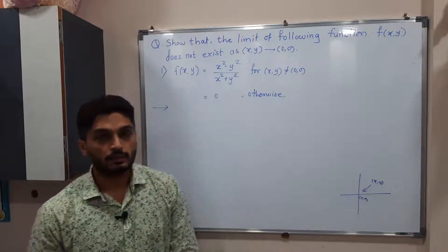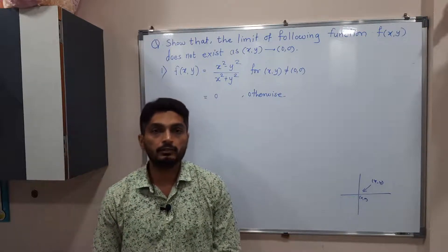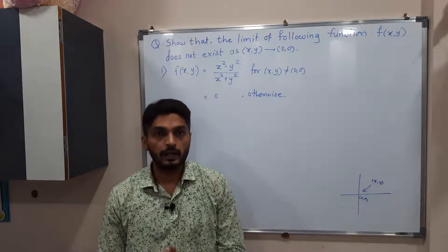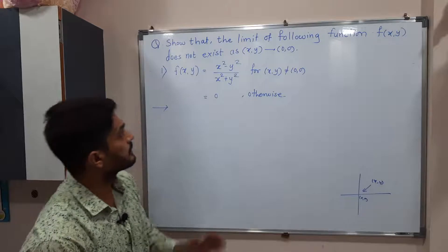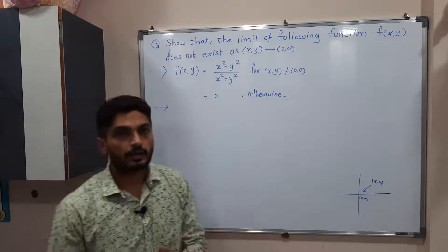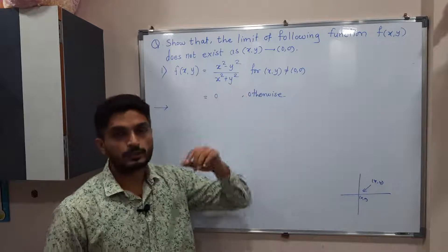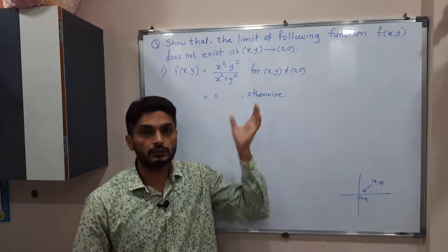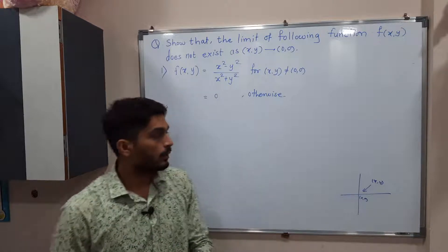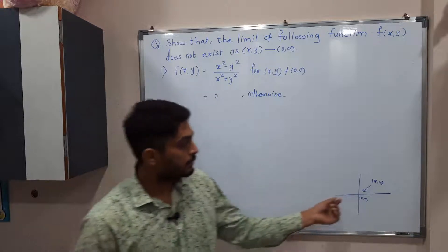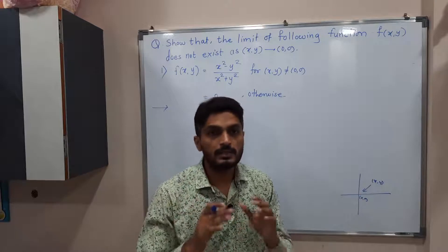Let us solve this example. We have to find the limit of a scalar value function at (x,y) equal to (0,0). The function f(x,y) is defined as (x² - y²)/(x² + y²) if (x,y) is not equal to (0,0), and simply 0 if (x,y) equals (0,0). As you can see in this diagram, (x,y) is moving towards (0,0).